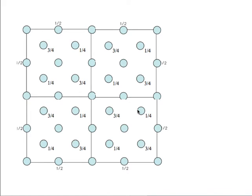Any ideas where the centre of symmetry would be? It will take some thinking, but it is located at 1/8,1/8,1/8 positions, or equivalent positions in the cell. You can imagine that better if you draw four of these cells next to each other - it is quite a lot of work but it makes life a lot easier.